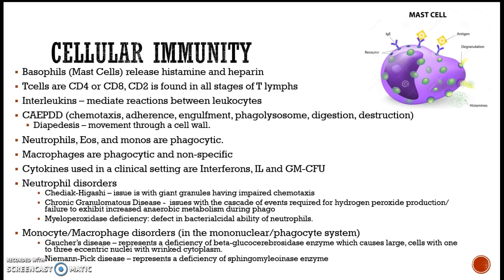For cellular immunity: basophils release histamine and heparin. T cells are CD4 and CD8. CD2 is found in all stages of T lymphocytes, and B cells are plasma cells that secrete antibodies. Interleukins mediate reactions between leukocytes. The phases of phagocytosis — remember 'can an elephant probably dig dirt' — chemotaxis, adherence, engulfment, phagolysosome formation, digestion, and destruction. Diapedesis is the movement of a cell through a wall, such as from the bloodstream into tissues. Neutrophils, eosinophils, and monocytes are all phagocytic, and macrophages are phagocytic and nonspecific — they can kill pretty much anything.